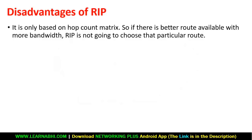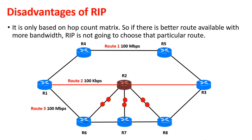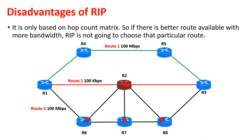Now let's look at a few disadvantages of RIP. RIP is only based on hop count metric, so if there is a better route available with more bandwidth, RIP is not going to choose that route. For example, with eight routers connected, the route with the least hops is Route 2 but there is heavy traffic on it. The router will not check that Route 1 is free and data could reach faster — instead it sends data via Route 2 only, making it even slower due to heavy traffic.